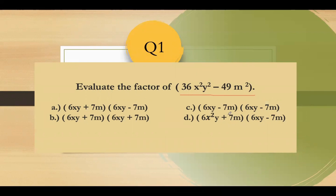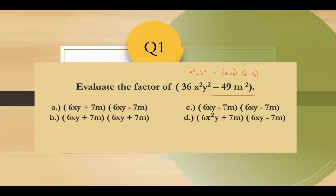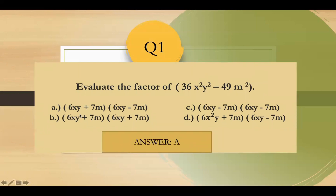We are looking for 6xy minus 7m. Since we have the standard form for the difference of squares: a squared minus b squared. The factors are two binomials: a plus b multiplied by a minus b. So the answer is letter A: 6xy plus 7m multiplied by 6xy minus 7m.